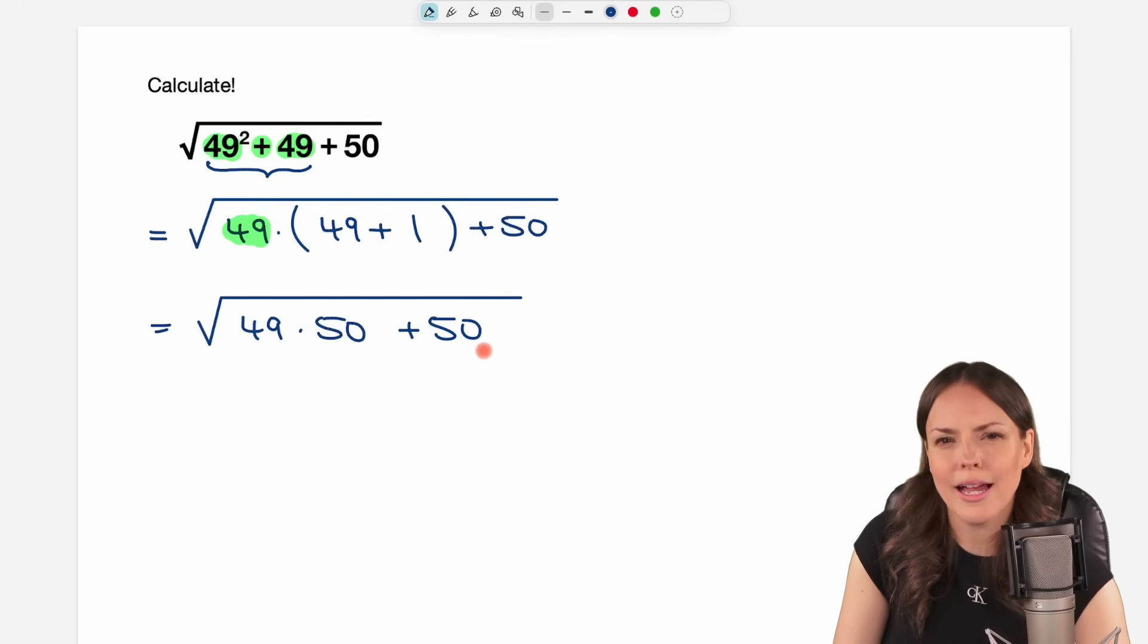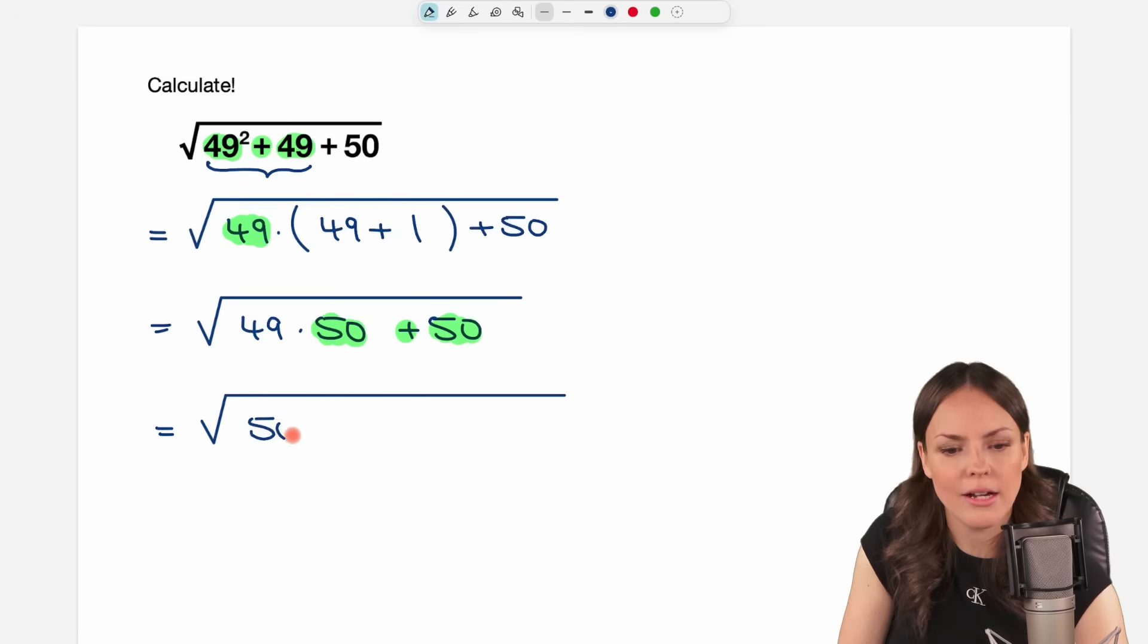Same thing actually. We have a 50 here. We have a 50 here. We have a plus in between. We can factor out the 50 again. So let's do this. If we factor out our green 50, what is left in our parentheses? We have the plus here in between. If we factor the 50 out, only the 49 is left here. And here again, we have 50 times 1. So if we factor out the green 50, only the 1 is left here.